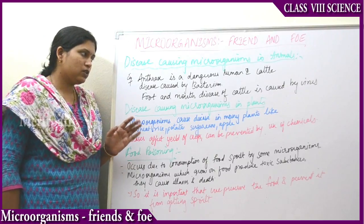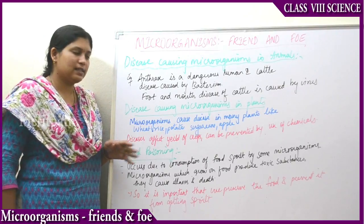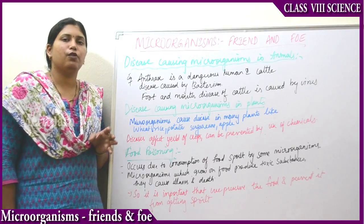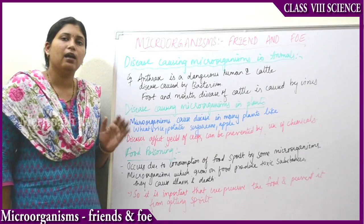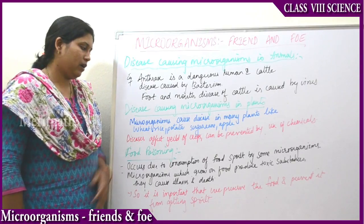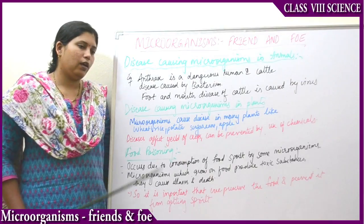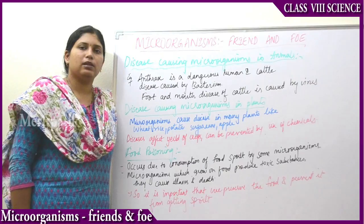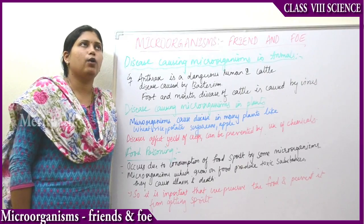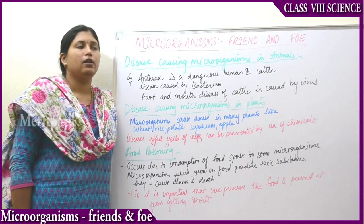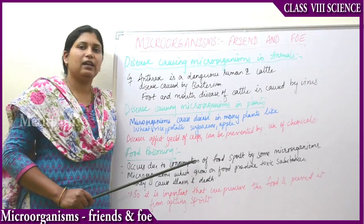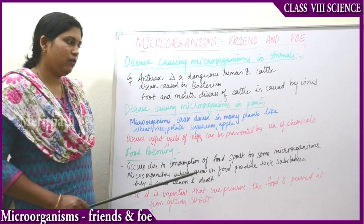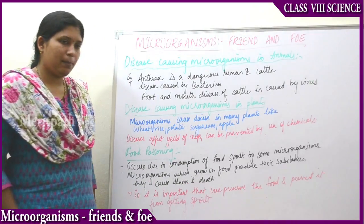Plants like wheat, rice, potato, sugarcane, and apple are some of the plants which get affected by harmful microorganisms. If the plant is affected by disease, the yield of the crops will be decreased and the quantity of the yield will be decreased.